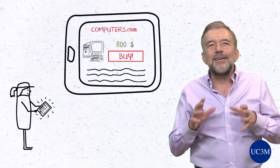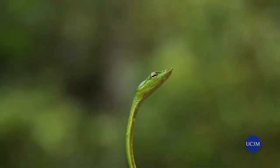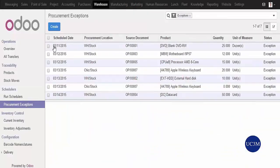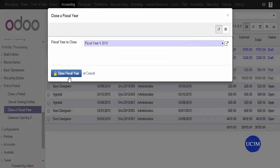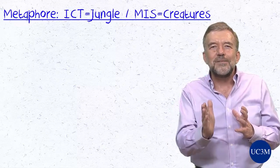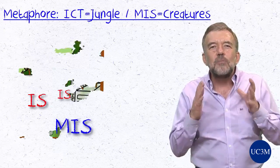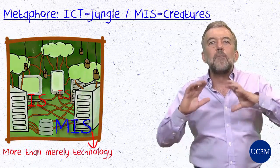We then suggested that this ICT jungle, that has engulfed the world, is inhabited by mysterious creatures — creatures that we must learn to live with — the information systems that guide and drive most organizations. If we work in accounting, financial applications will control with an iron fist how we account for transactions. If we work in sales, a system such as salesforce.com will constantly pursue us demanding data. This metaphor already hints at a key distinction: information systems, and specifically management information systems, are supported by and live within the ICT jungle, but they are more than merely technology.